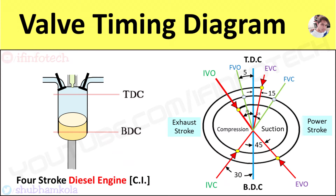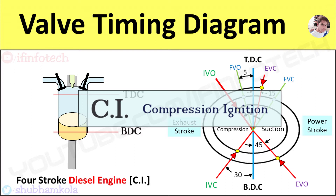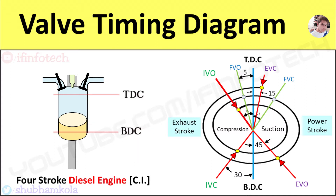In this video we'll discuss the actual valve timing diagram for a CI engine. CI stands for compression ignition, where air is compressed within the cylinder and the heat of compression is used to ignite the fuel. This is used in diesel engines, and we'll be discussing the valve timing diagram for a four-stroke diesel engine.